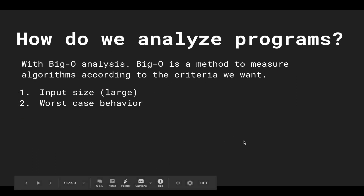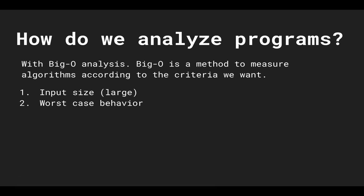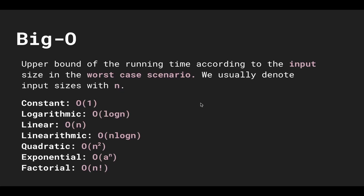The way we analyze algorithms according to those two criteria — large input size and worst case — is something called Big O analysis. Big O is a method to measure algorithms according to those criteria: we want large input size where n approaches a million or infinity, and we want to see the worst case behavior. Big O is an upper bound of the running time according to the input size in the worst case scenario, and we usually denote input size with n.